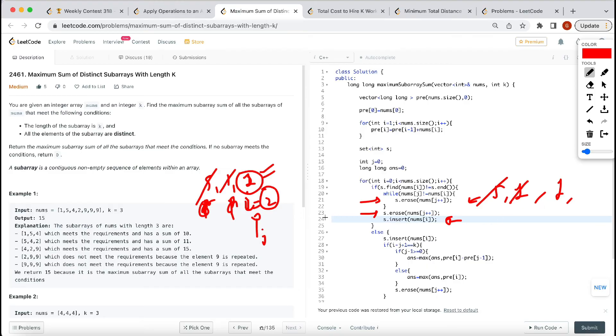Now we have removed and inserted elements, so now we have all elements distinct. Then if we have K size, we calculate the answer.